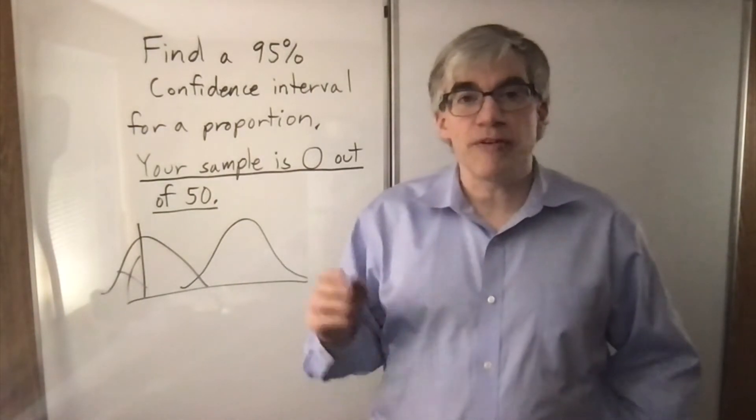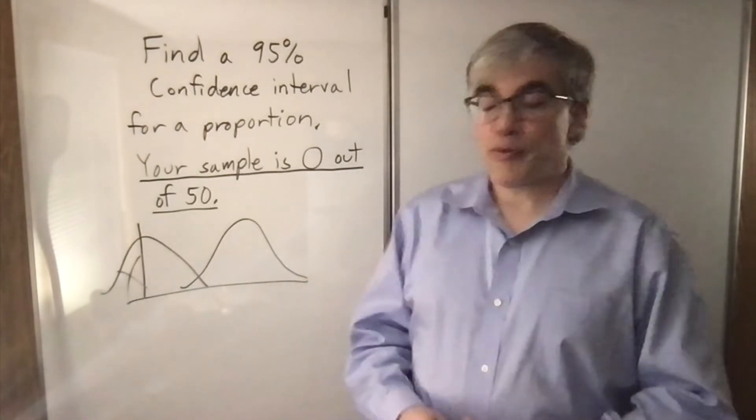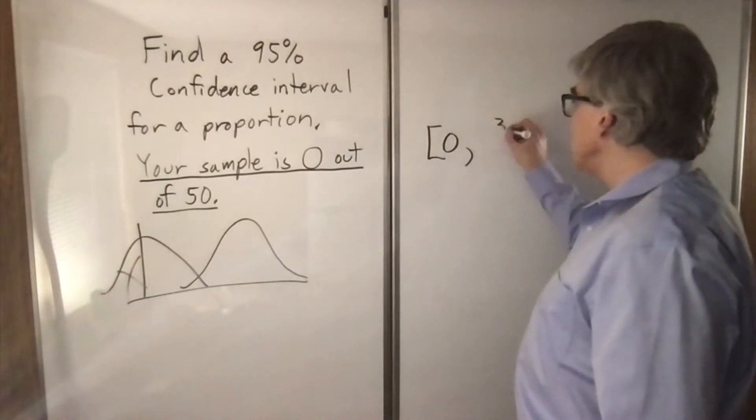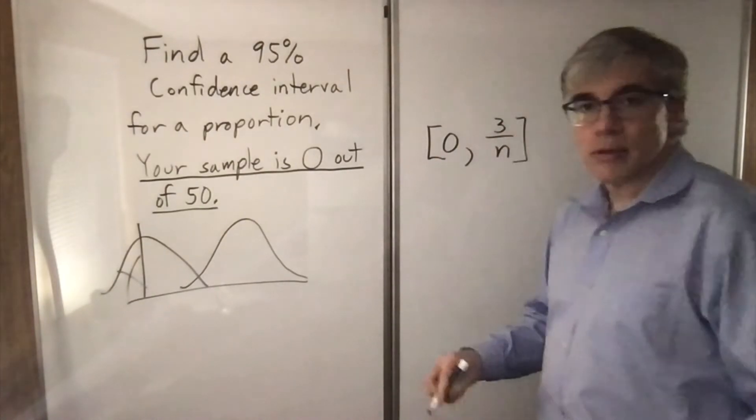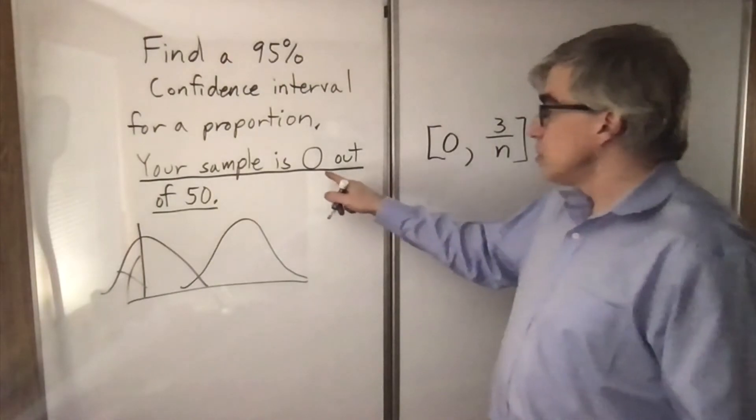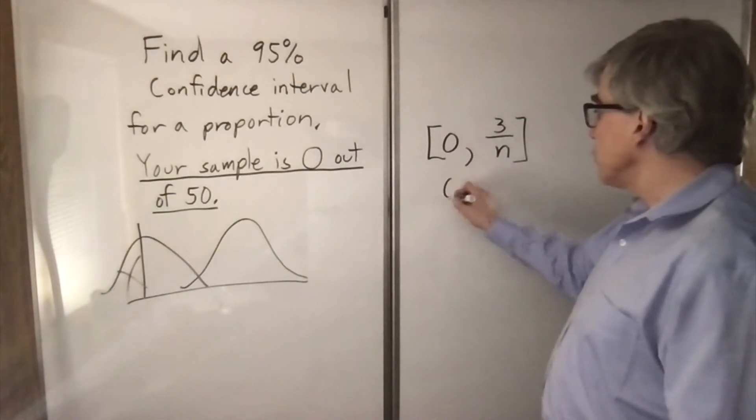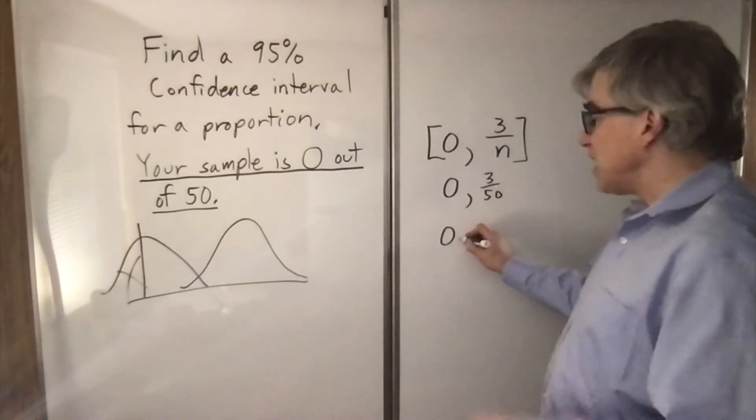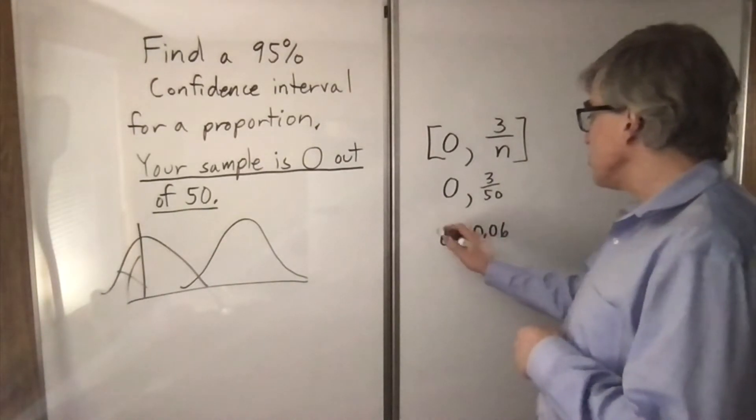They have devised a rule of thumb that seems to work fairly well. The confidence interval you use is from 0 up to 3 over n. So for this example, n is 50, so we're going from 0 to 3 over 50. So your 95% confidence interval is 0 to 0.06.